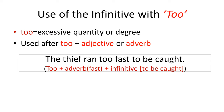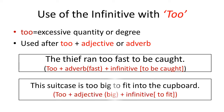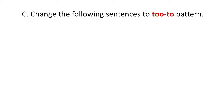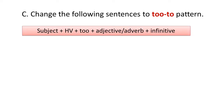In that sentence, 'to be caught' is the infinitive. Let's take another example: 'This suitcase is too big to fit into the cupboard.' Here 'big' is an adjective and 'to fit' is the infinitive. Now let's solve Exercise C — change the following sentences to the 'too' pattern. The formula is: Subject + helping verb + 'too' + adjective/adverb + infinitive.